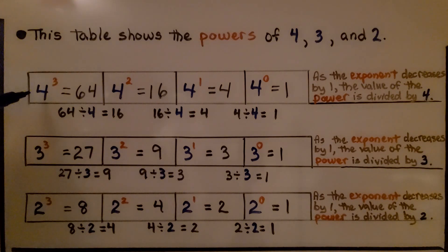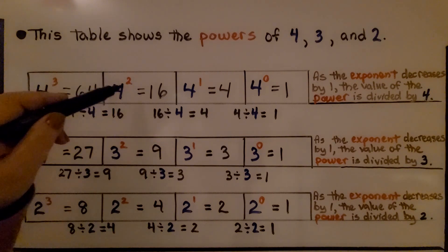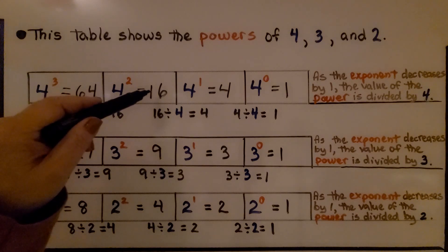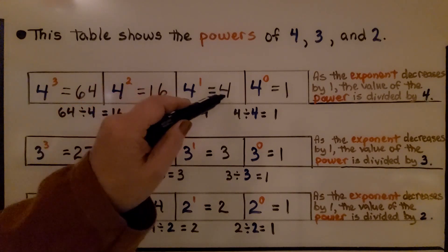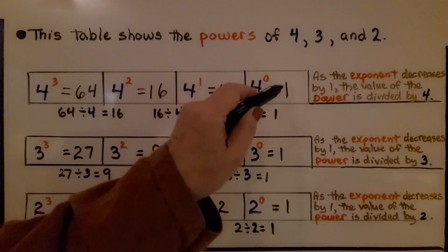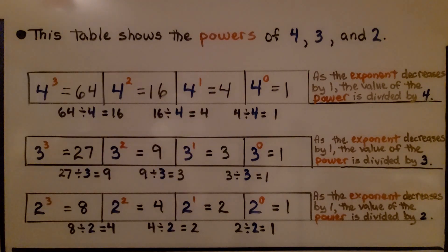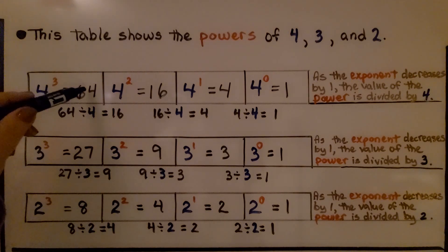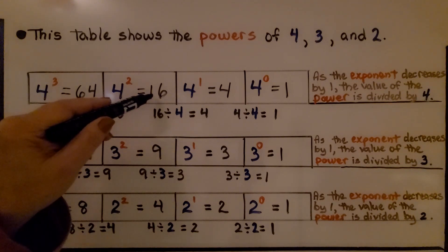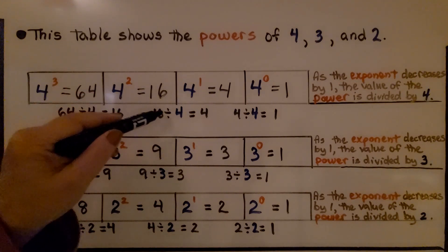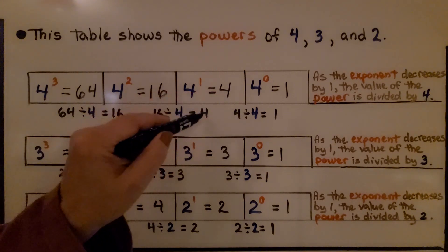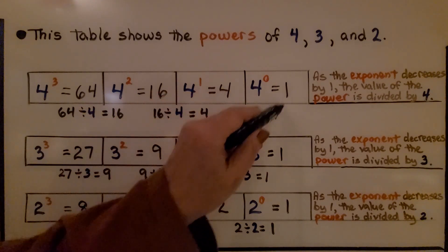We have 4 to the third power, that means 4 times 4 times 4, that's equal to 64. 4 to the second power is 4 times 4, that's equal to 16. And 4 to the first power is just equal to 4. And 4 to the 0 power is equal to 1. As the exponent decreases by 1 — going from 3 to 2 to 1 to 0 — the value of the power is divided by 4, that base. We're going from 64 divided by 4 to get 16, then 16 divided by 4 to get 4, and 4 divided by 4 to get 1.